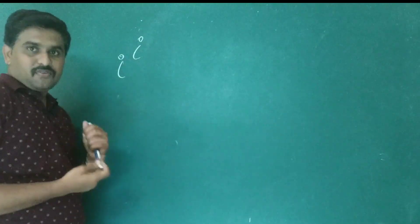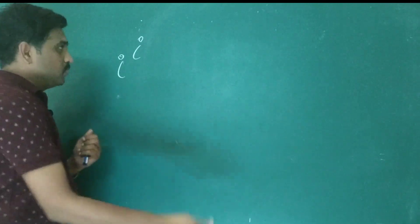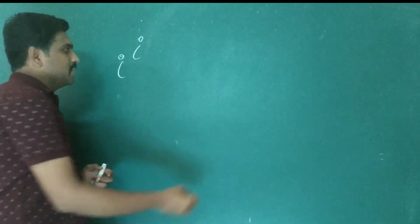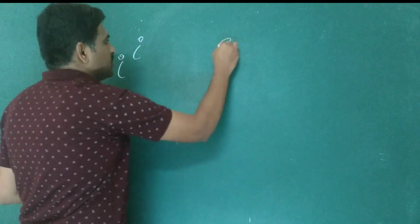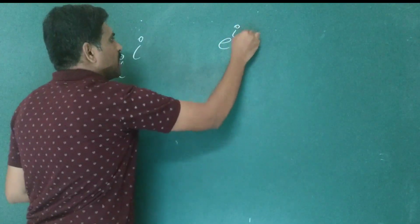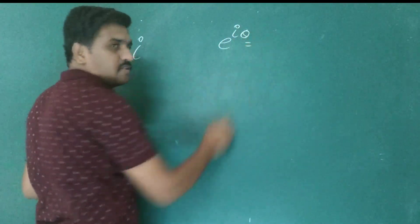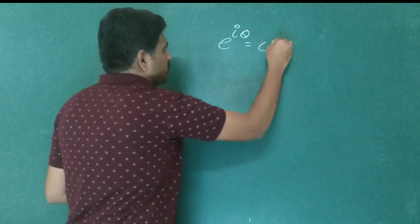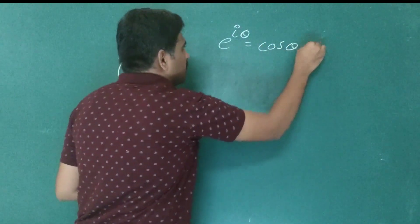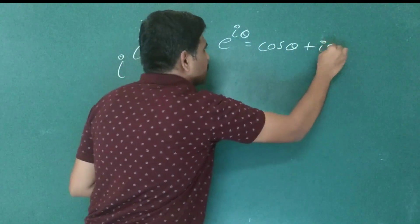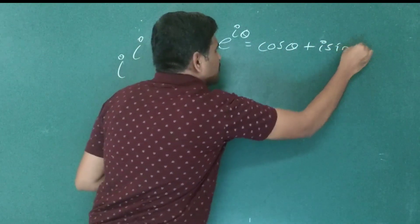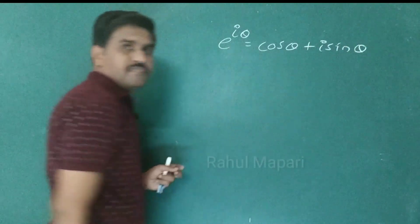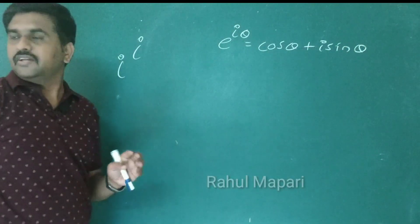If you know Euler's formula — you should know Euler's formula actually. This is e power i theta is equal to cos theta plus i sine theta.